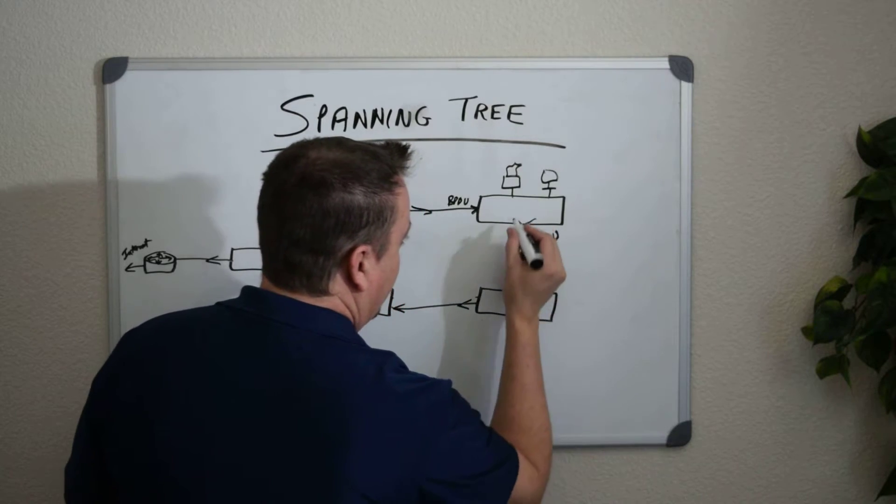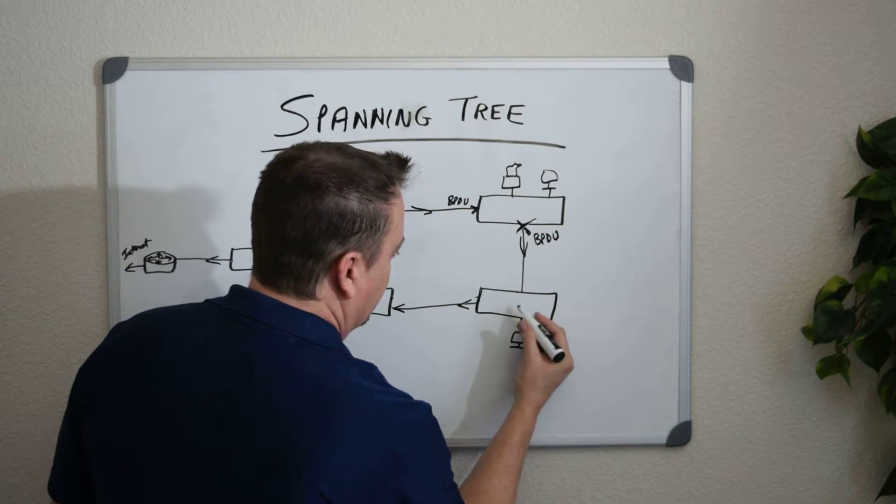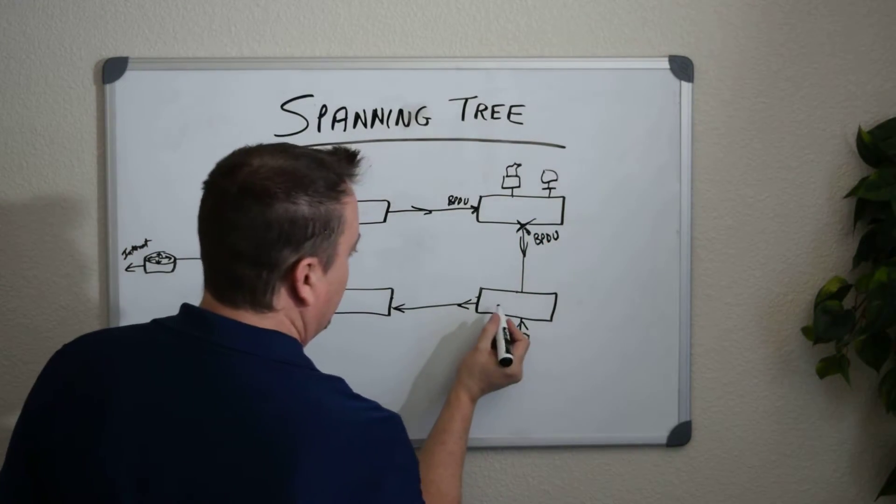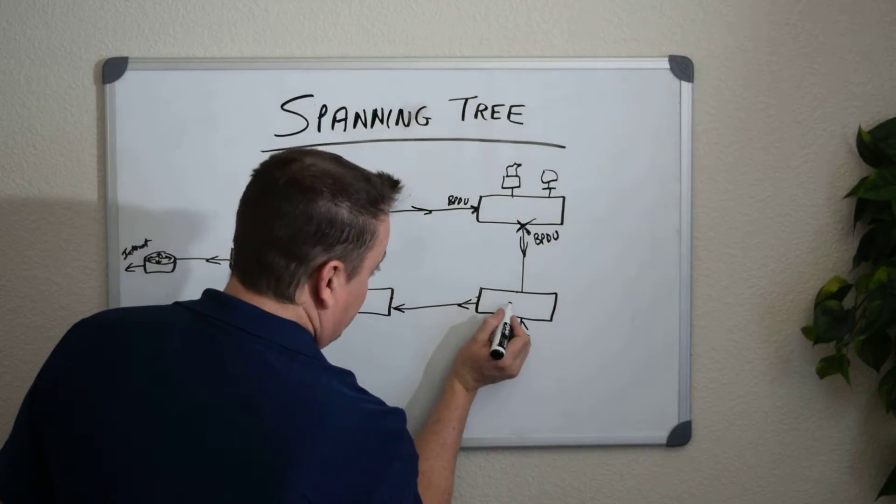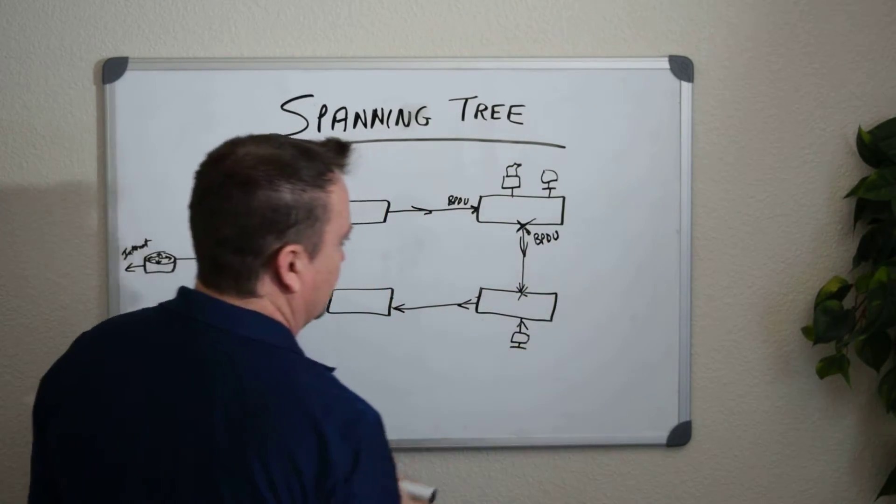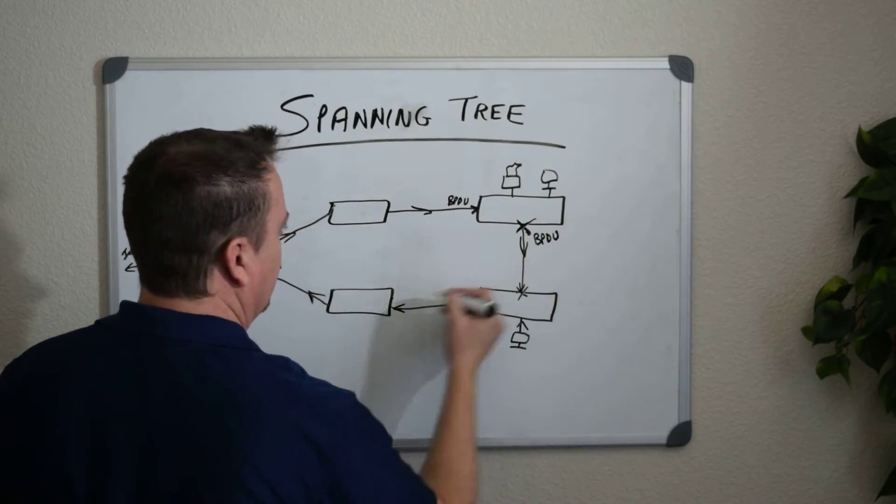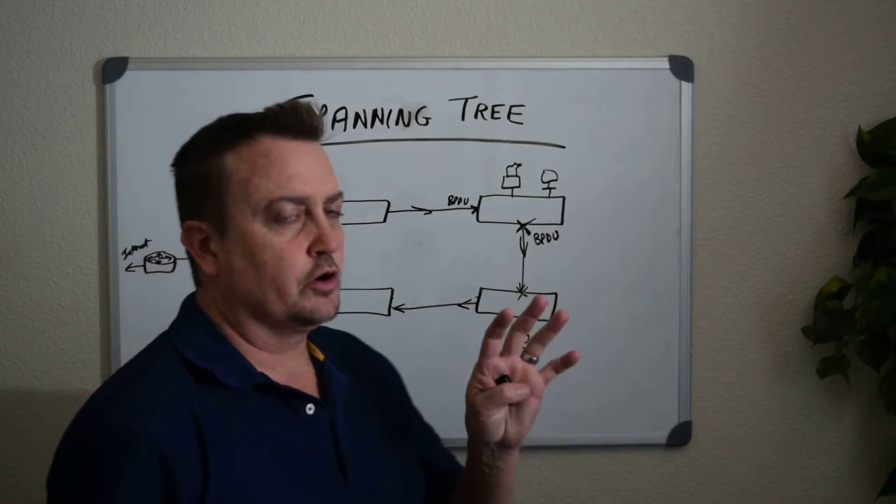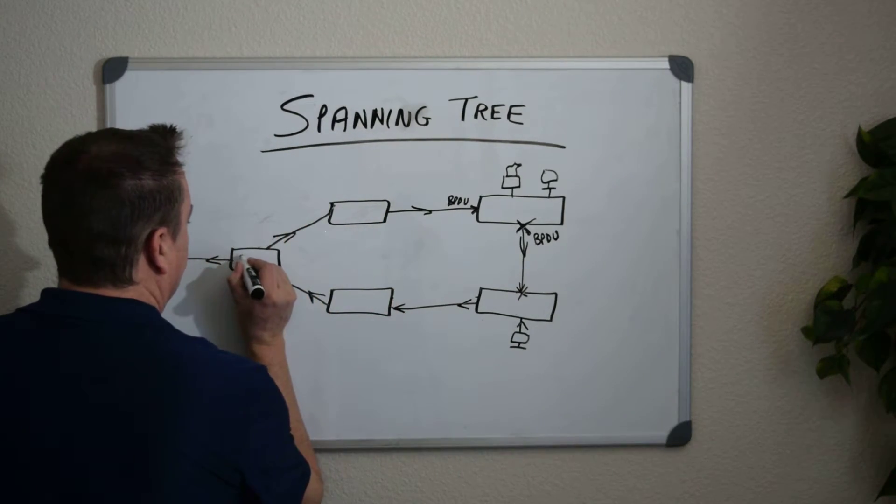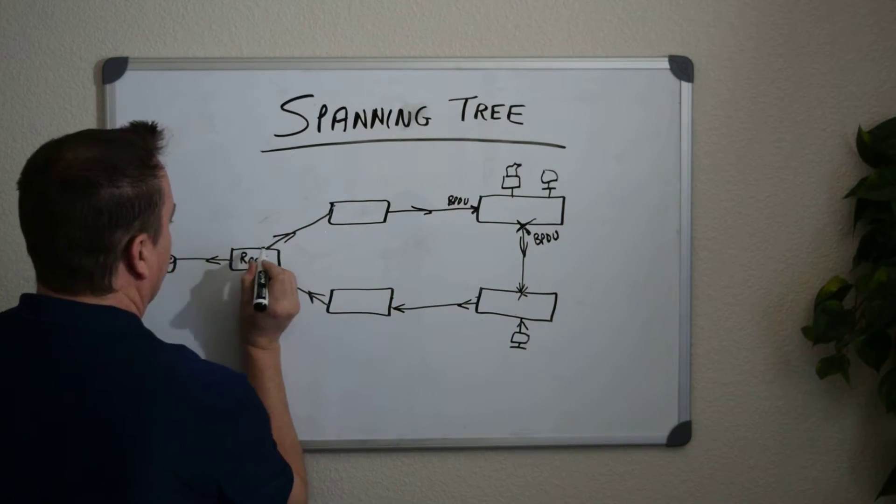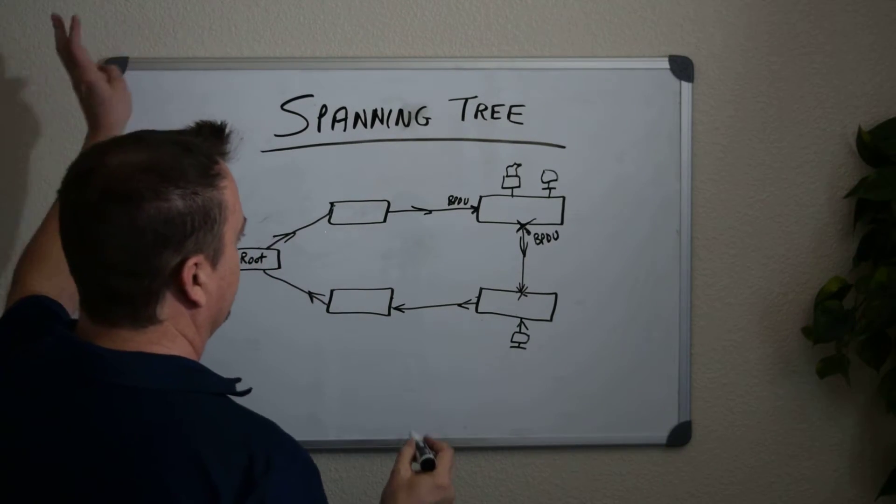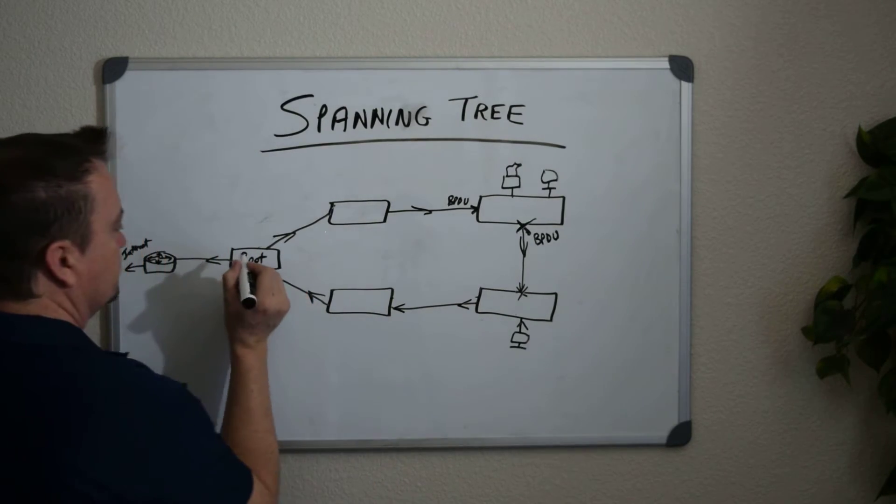If that happens before these do, or if it doesn't happen before this switch does, this switch determines the same thing. It says, I see a loop here. I sent this BPDU out from myself here, and it came back in here. So I'm going to block this interface because this one seems to have the longest connection back to, and we're going to get into a root switch. A root switch typically is the one connected to your router, the one going to an internet connection, an external connection from your network, the one that's the most important.